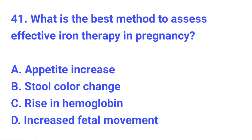Question number 41. What is the best method to assess effective iron therapy in pregnancy? The correct answer is C, rise in hemoglobin.